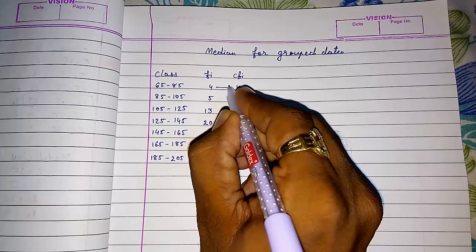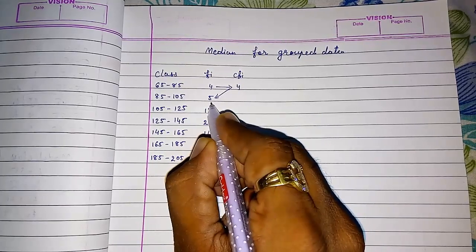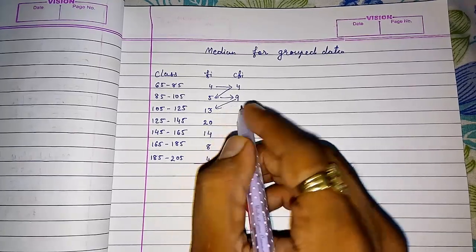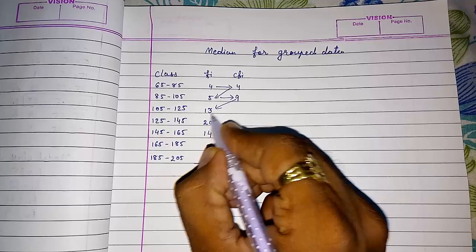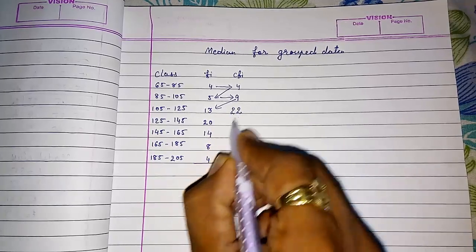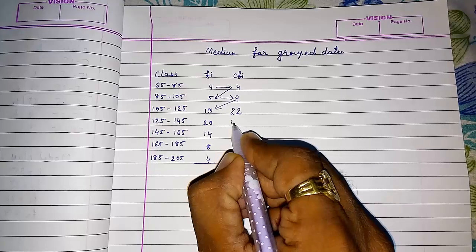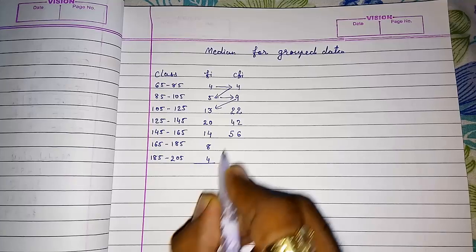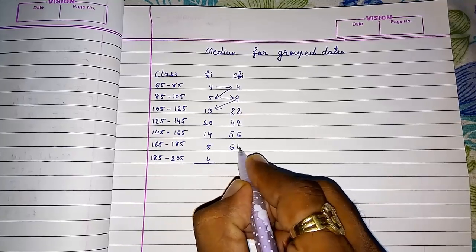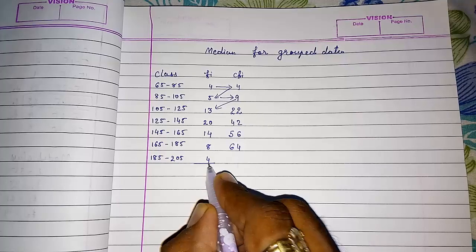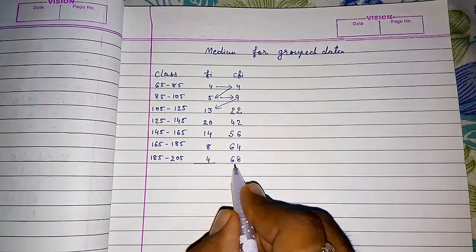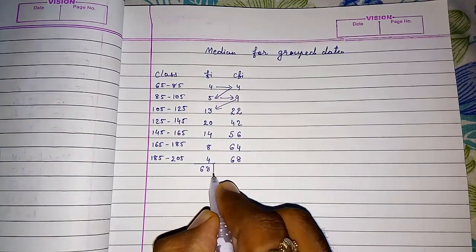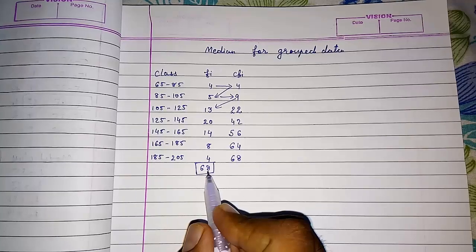Here we get 4, then 4 plus 5 gives you 9. 9 plus 13 gives you 22. 22 plus 20 gives you 42. 42 plus 14 gives you 56. 56 plus 8 gives you 64. And 64 plus 4 gives you 68. The last number of cumulative frequency will be the sum of frequency.